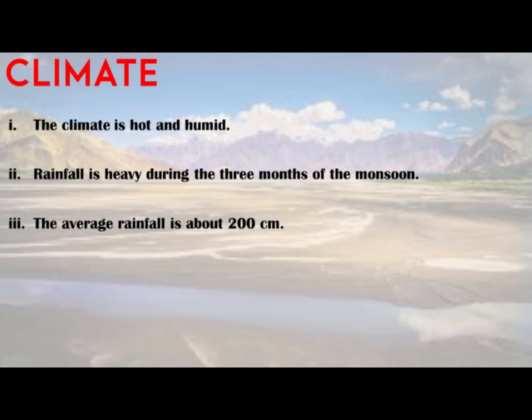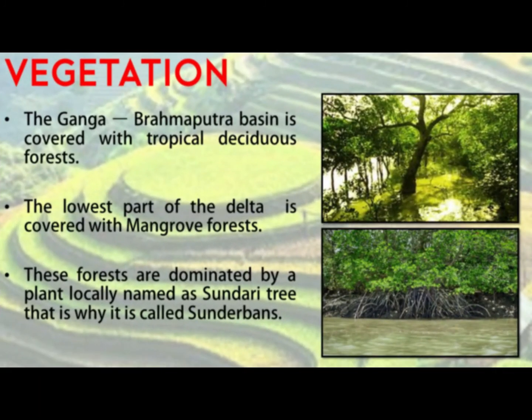The climate of the Ganga-Brahmaputra Basin is hot and humid. The area receives heavy rainfall during the three months of the monsoon — June, July, and August — with an average rainfall of about 200 centimeters. Vegetation in the Ganga-Brahmaputra Basin is covered with tropical deciduous forest, which grows well in hot and humid regions. Nowadays, the area has been largely converted into farms and settlements, with major cities developing here, which is the reason for the decline of deciduous forest.